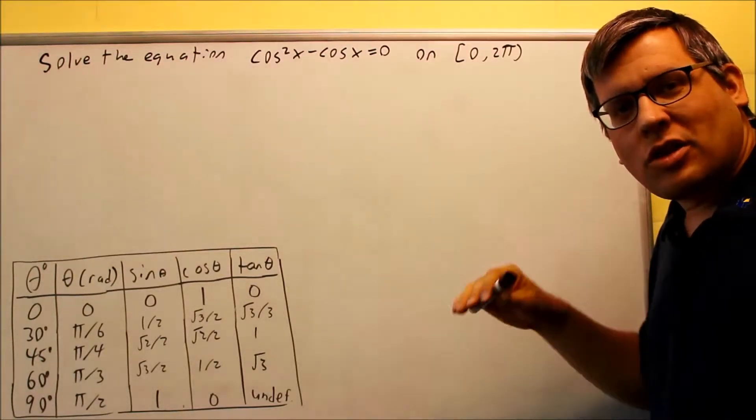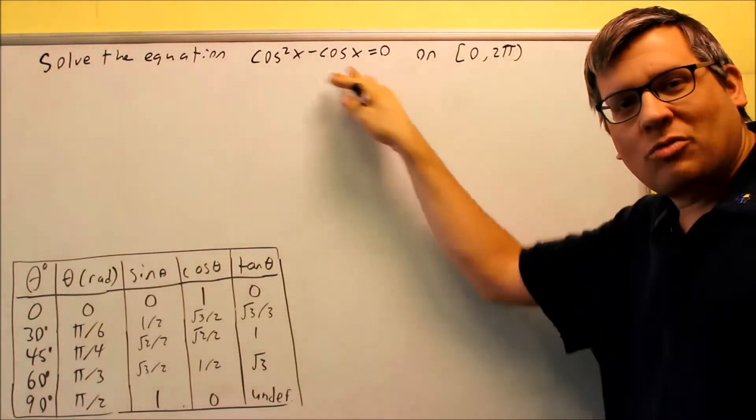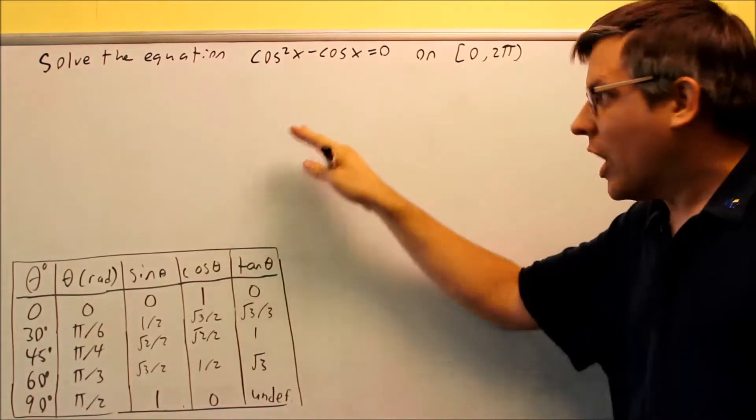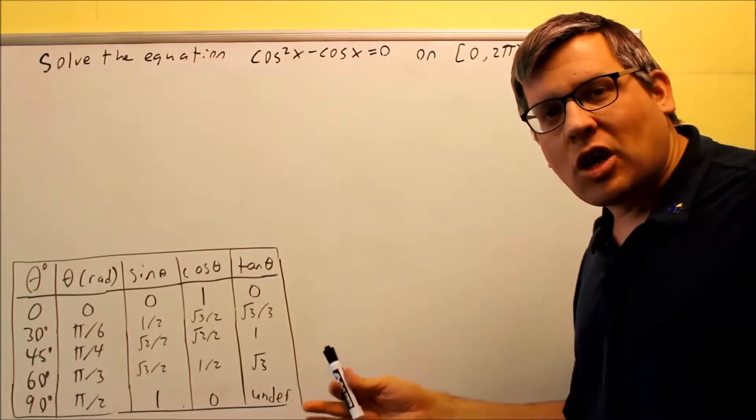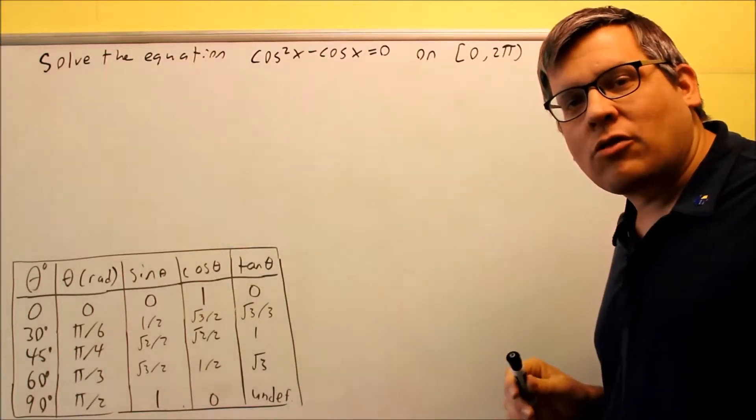The next equations that we're going to talk about in this section have to deal with doing some kind of factoring. So these are ones where we have more than one trig function and these are going to involve either putting in some kind of an identity to solve it or doing some kind of factoring technique.